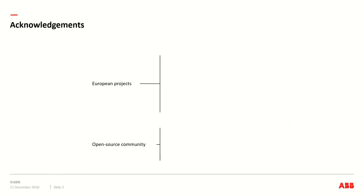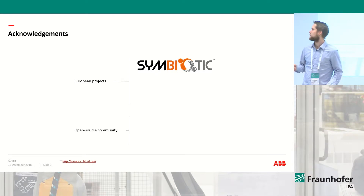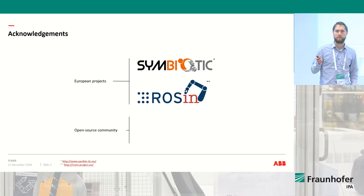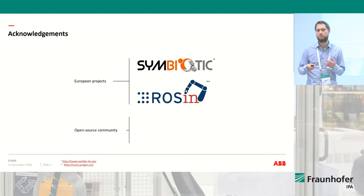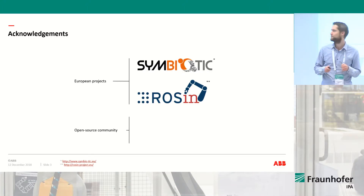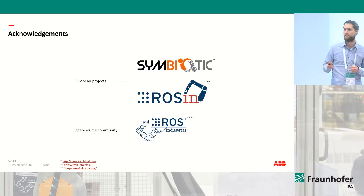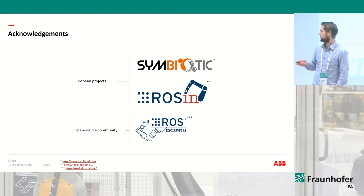I'll start with some acknowledgments, because without these things I would probably not be here presenting today. First, there's a European project called Symbiotic, in the context of Factories of the Future, and it's inside that project I have developed some ease-of-use packages which I will present today. The next project is Rosin, which you heard about yesterday — during this project I went through the internal ABB open source process and made the packages available online. It's not common in ABB to contribute to open source projects. And finally, the ROS-Industrial community, from whom I've gotten a lot of help with guidelines and conventions.